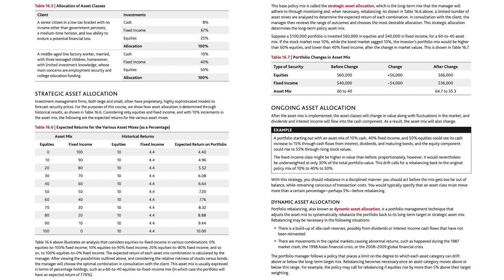Strategic Asset Allocation: investment management firms often have proprietary, highly sophisticated models to forecast security prices. For the purposes of this course, we show how asset allocation is determined through historical results, as shown in Table 16.6. Considering only equities and fixed income, with 10% increments in the asset mix, the following are the expected returns for the various asset mixes, ranging from 0% equities to 100% fixed income through to 100% equities to 0% fixed income.